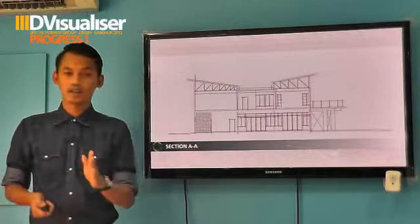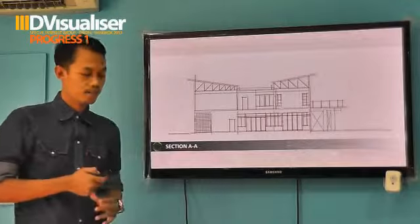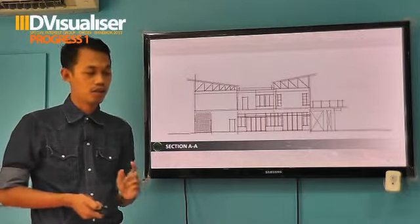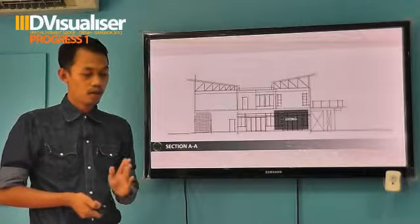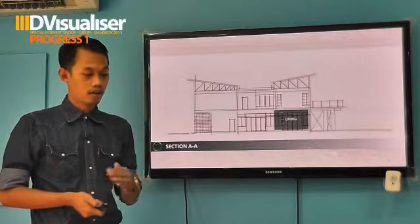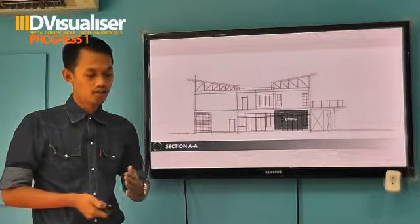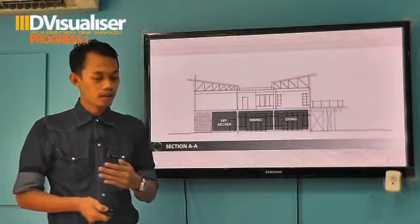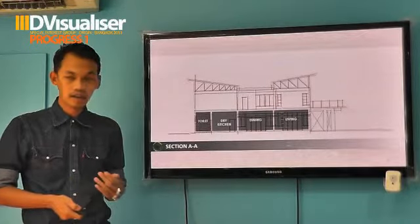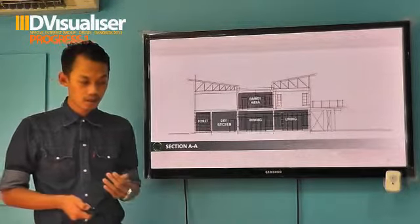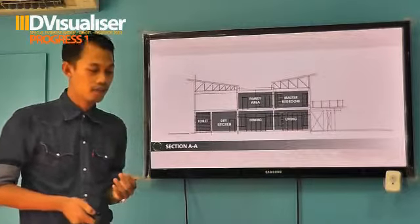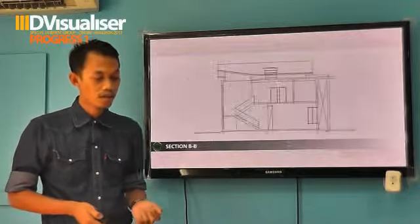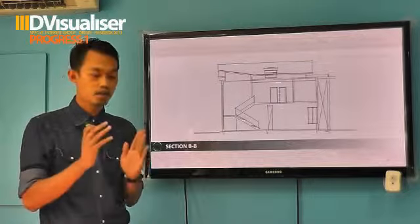This is a cross section for this design. This one is Section A. The section has a left and right — that is a living, dining, bedroom, bed kitchen, toilet, family area, master bedroom and bedroom two.